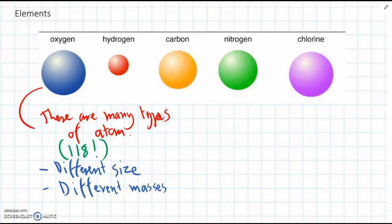All these different types of atoms, we call these elements. They're kind of like a species of a living thing, like different species of animals. Every element has particular properties that are unique just to that element.